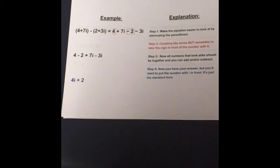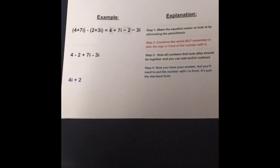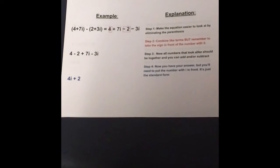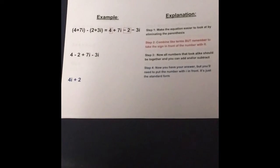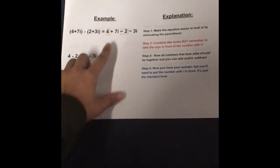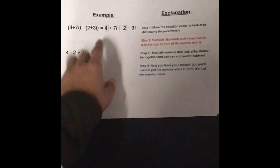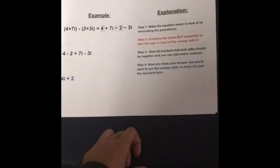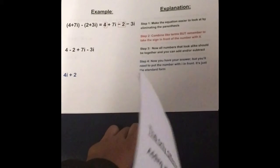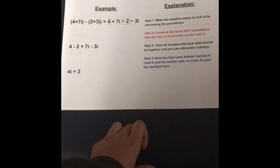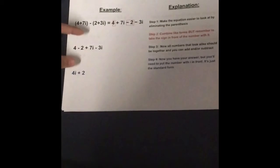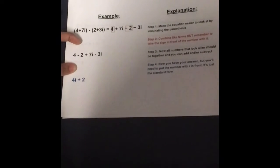Example number one. Step one: Make the equation easier to look at by eliminating the parentheses. Here's your main problem. Step two: Combine like terms, but remember to take the sign in front of the number with it.